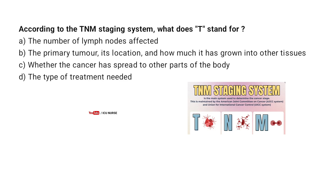According to the TNM staging system, what does T stand for? A. The number of lymph nodes affected. B. The primary tumor, its location and how much it has grown into other tissues. C. Whether the cancer has spread to other parts of the body. D. The type of treatment needed.